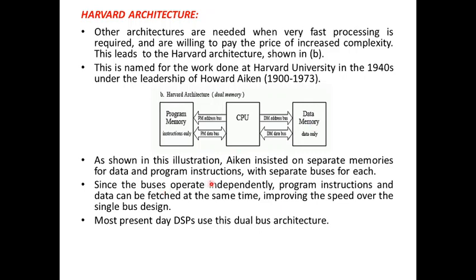As shown in this illustration, Aiken insisted on separate memories and the buses operate independently. Program instructions and data can be fetched at the same time, enabling parallel execution, which improves speed over a single bus design. We have a separate dedicated data bus for program memory and a separate dedicated bus for data memory. Most present-day DSPs use this dual bus architecture.